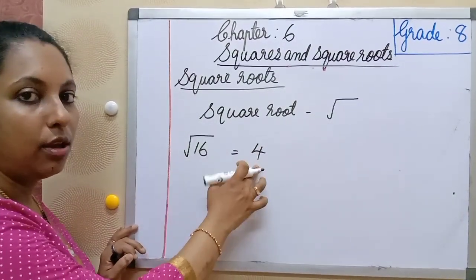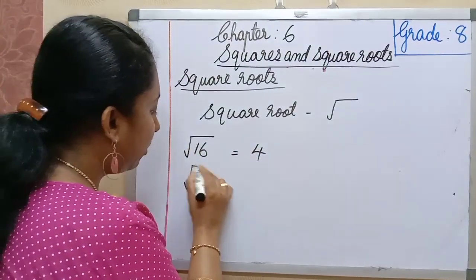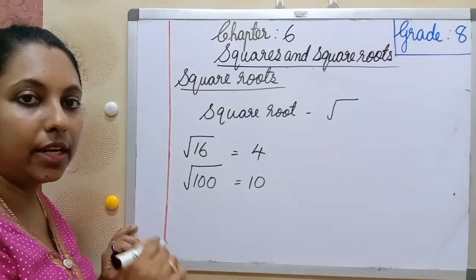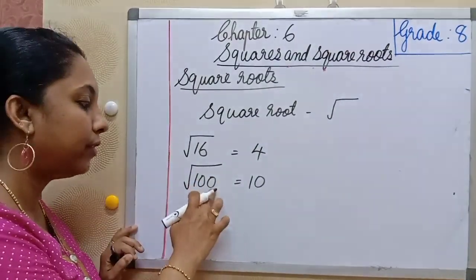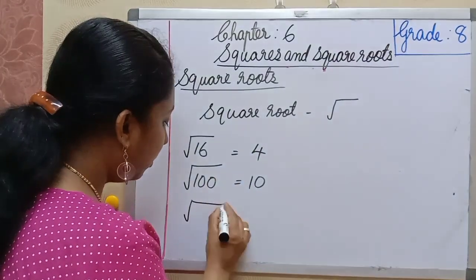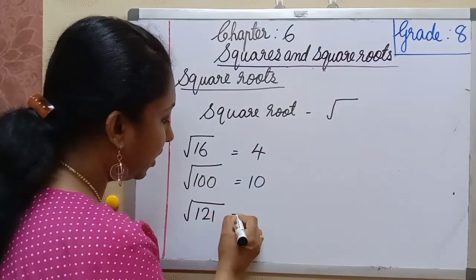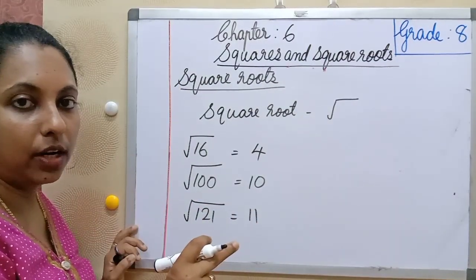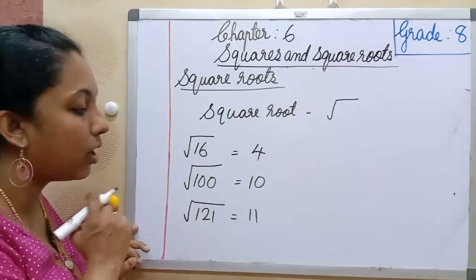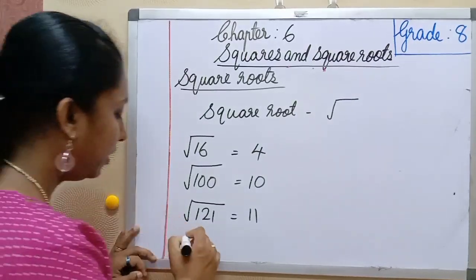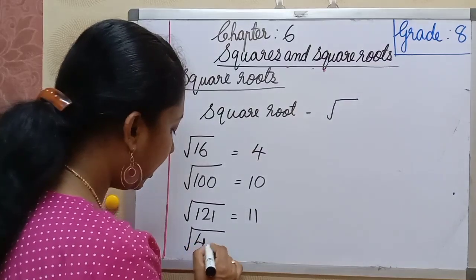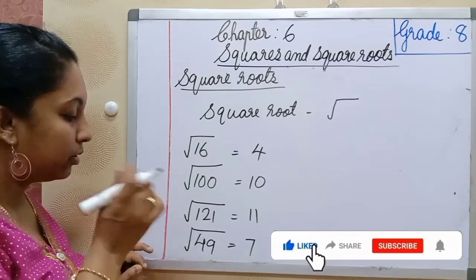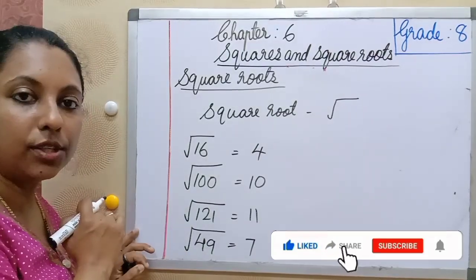4 squared is 16, so square root of 16 is 4. Square root of 100 is 10, because 10 × 10 = 100. Square root of 121 is 11, because 11 × 11 = 121. Square root of 49 is 7, because 7 × 7 = 49.